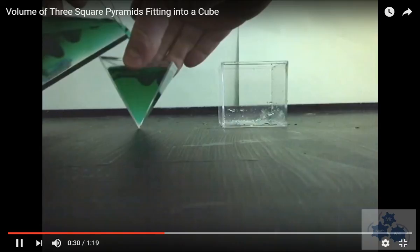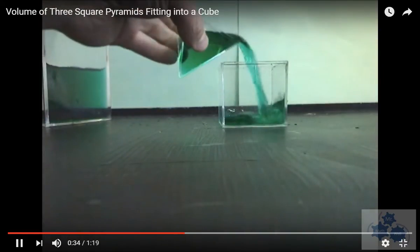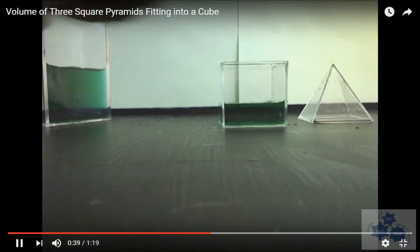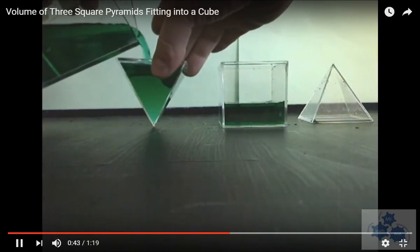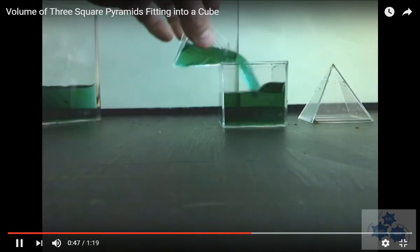And so what he's doing is he's representing the volume of the pyramid. Fills it right up to the brim. He's pouring it into the cube with the same base dimension. See that? So Josiah's guess at one half doesn't look too bad there, but let's just see. So there's two.